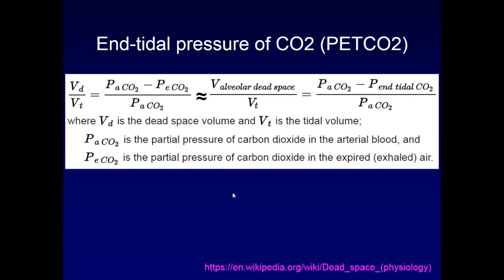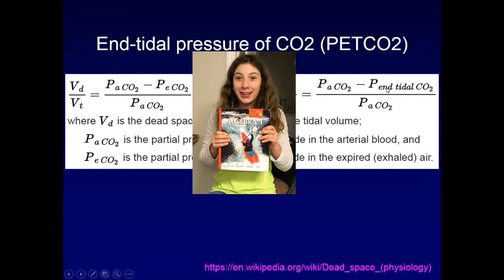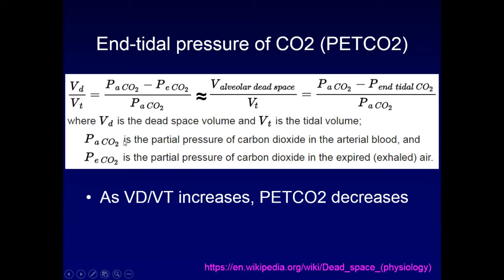Using the Bohr equation: on the left side is the dead space-to-tidal volume ratio; on the right, arterial PCO2 minus exhaled CO2 divided by arterial CO2, roughly equivalent to alveolar dead space, where you substitute end-tidal CO2. Algebraically, as the VD/VT increases, the end-tidal CO2 decreases — confirming that end-tidal CO2 inversely reflects dead space ventilation.